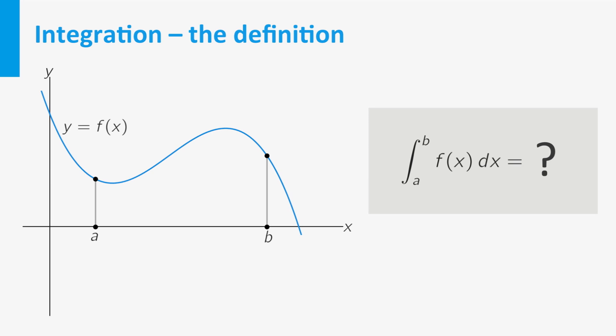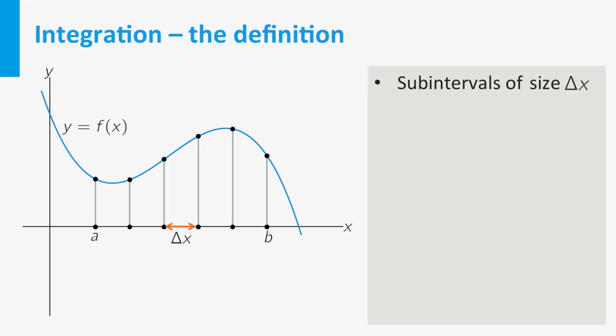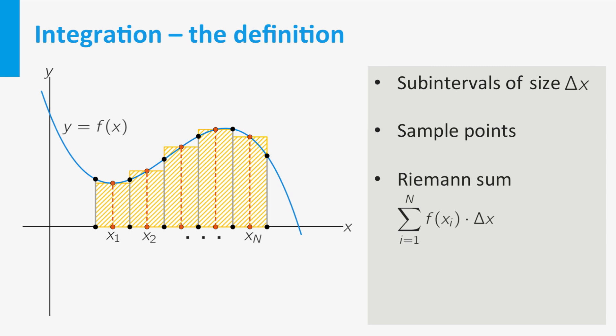Let us run through the procedure again. First, we break up the interval into a number of subintervals of length delta x. Then we choose points with x-coordinate x1, x2, etc., one in each subinterval. These points are called sample points. Given a subdivision and the sample points, we can write the Riemann sum. The sum here represents the total area of a number of rectangles.